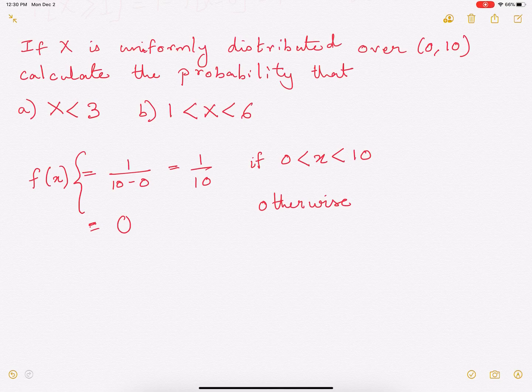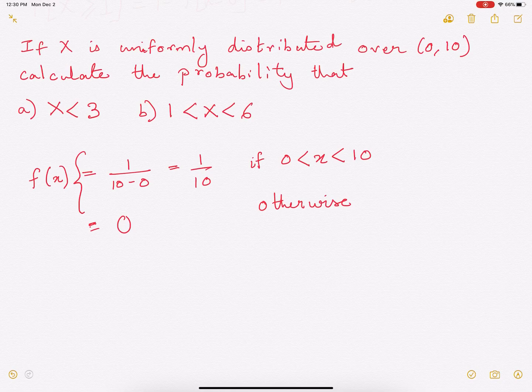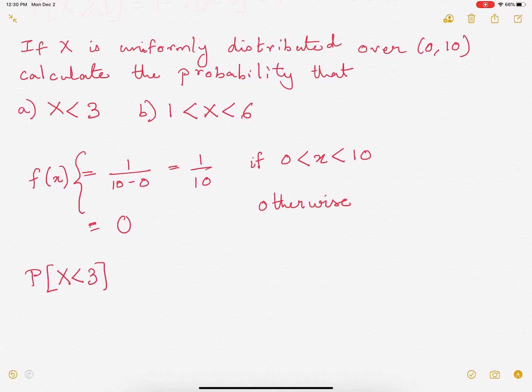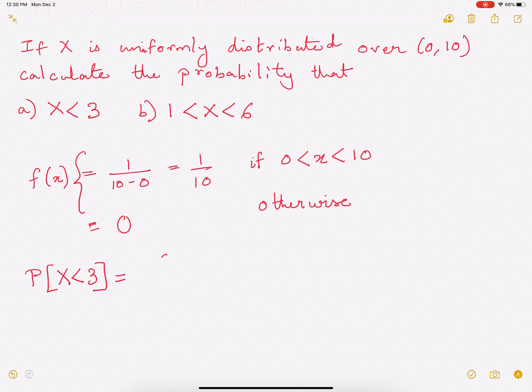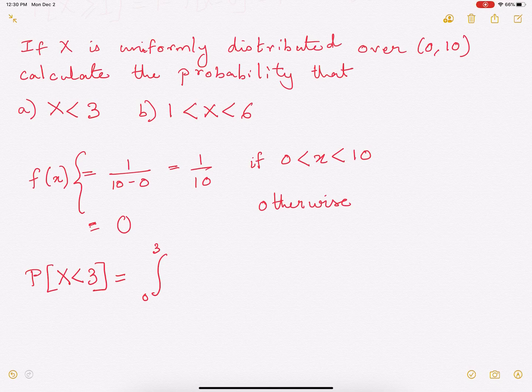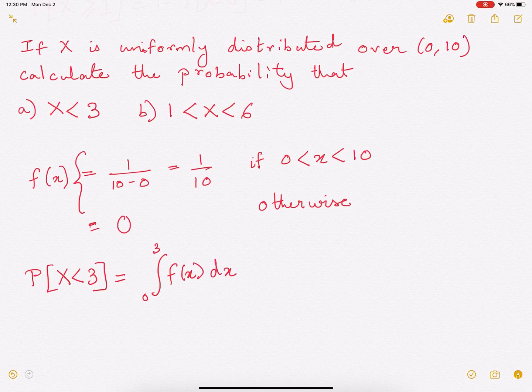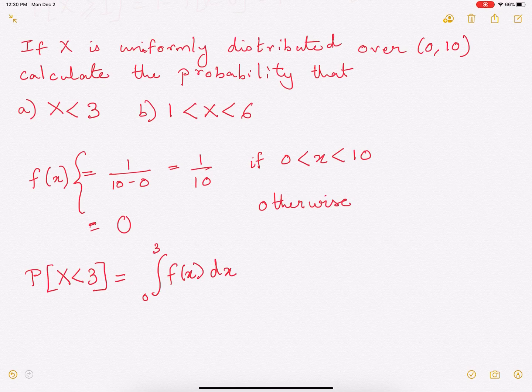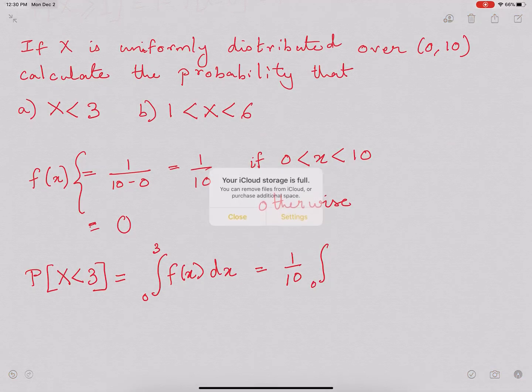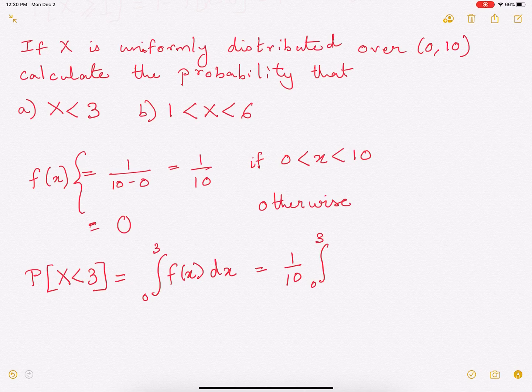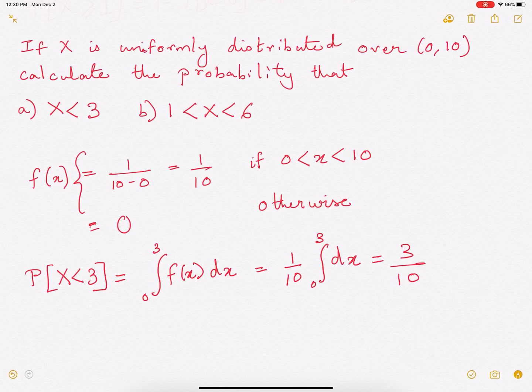Now to find the probability of x is less than 3, we have to find it in this way. Probability x less than 3 is equal to, we have to integrate the probability density function between 0 and 3. That is, between 0 and 3, fx dx. Now fx between 0 and 3 is going to be 1 over 10, that's a constant, so it will come out of this integration and hence we will have this as 0 to 3 dx. And this evaluates to 3 over 10.